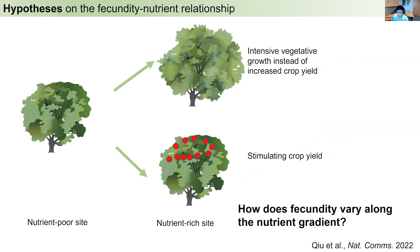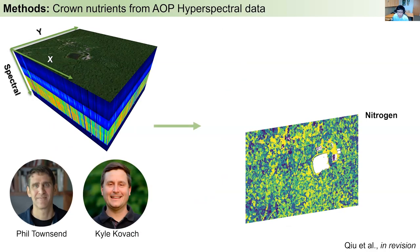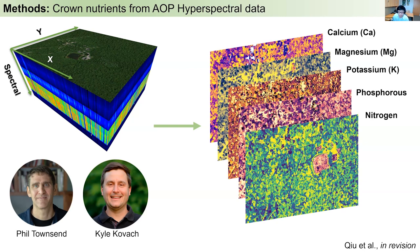Studies are still limited to a few locations and a few species due to the large investment needed for field measurement on both nutrients and fecundity variables. In horticultural practice, a proper amount of fertilization would stimulate crop yield. On the other hand, trees growing under more fertile sites would potentially grow faster and not reproduce as much — increased nutrients might lead to extensive vegetative growth at the expense of tree fecundity. So there are really two pathways here. To test those hypotheses, recall that hyperspectral data from NEON AOP can generate canopy nitrogen. Through collaboration with Phil Thompson and Kyle, we can also produce other nutrients like phosphorus, potassium, magnesium, and calcium that are potentially important for fecundity.